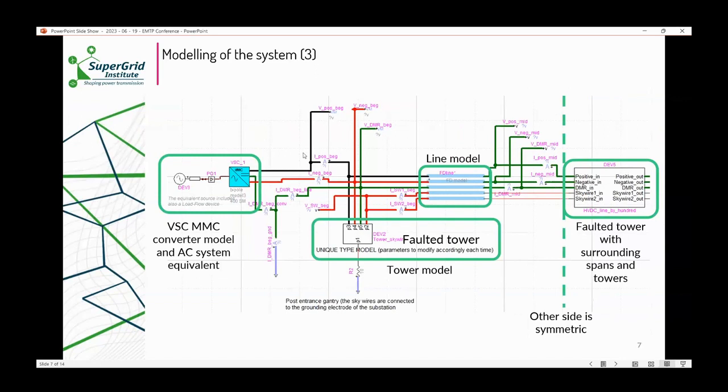So if you zoom out, what I presented is in this box on the right-hand side, which says faulted tower with surrounding spans and towers. Then if you neglect all these scopes, we have a FD line model on the left, which is, for example, 150 kilometers if you want to simulate the fault at the middle of the line. On the left, we have the line termination tower, and then we have the VSC MMC model with AC system equivalent. If you want to change the location of the fault along the line, other side is symmetric. We have the tower model and surrounding spans in the middle. On each side, we have an FD line, and we just change the length of this line. So if you want the fault to be 50 kilometers from the beginning, we put the left FD line model to 50 kilometers and the right-hand side FD line model to 250 kilometers.